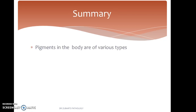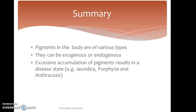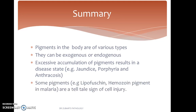To summarize: pigments in the body are of various types — exogenous and endogenous. Excessive accumulation of pigments results in a diseased state such as jaundice, porphyria, and anthracosis. Some pigments, such as lipofuscin and hemozoin pigment in malaria, are a tell-tale sign of cell injury. They indicate cell injury and can help in diagnosis, especially hemozoin pigment in malaria.